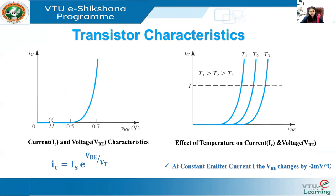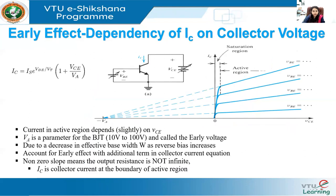Looking at the transistor characteristics — IC at different values — we observe the current and voltage characteristics and the effect of temperature on the collector current and voltage VBE. At constant emitter current, VBE changes by approximately minus 2 millivolts per degree Celsius.